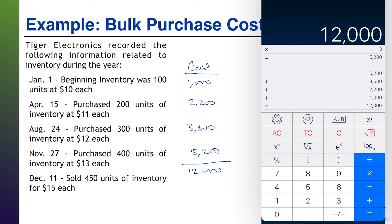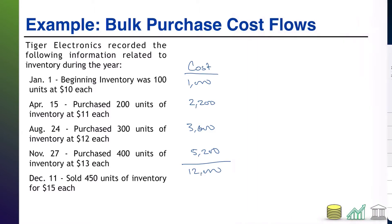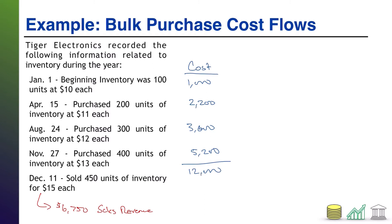Our next piece of information is what did we sell. We sold 450 units at $15 each, which comes out to $6,750. I'll put that off to the side because that is not a cost to the company — that is the price we charged customers for those 450 units. That is our sales revenue, which goes on the income statement. We also need to list cost of goods sold so investors can calculate gross profit on these 450 units.